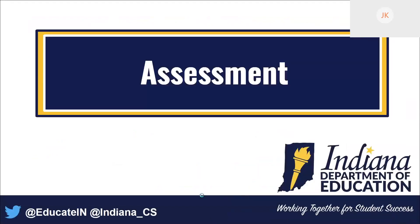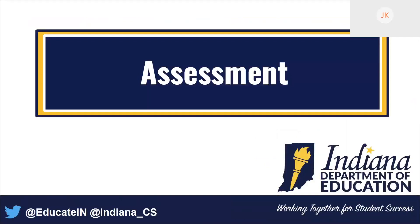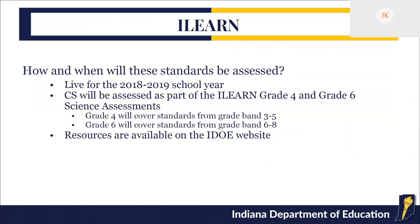Computer science standards will be assessed on the new ILEARN assessment starting this coming spring, the 2018-19 school year. CS will be included as part of the ILEARN grade four and grade six science assessments. The grade four assessment will cover standards in grade band 3 to 5; the grade six assessment will cover CS standards from grade band 6 to 8. Various resources related to assessment are also on the DOE website.